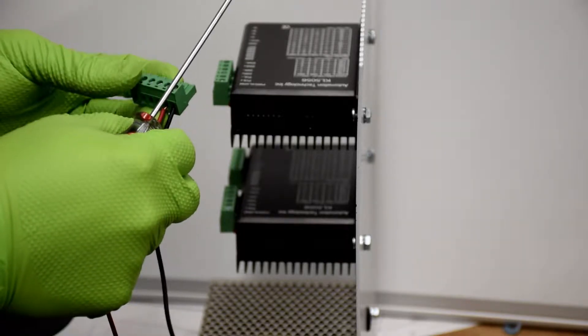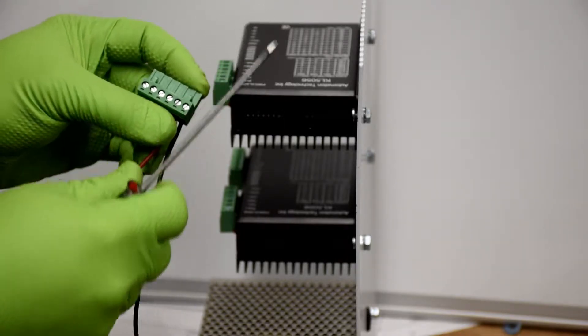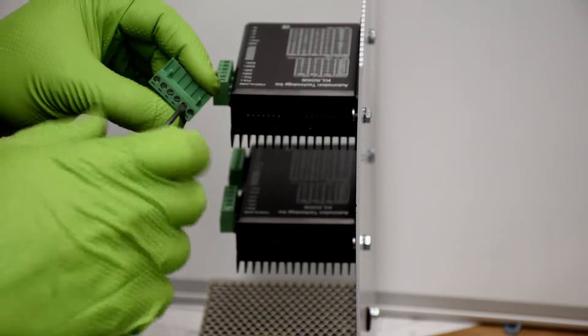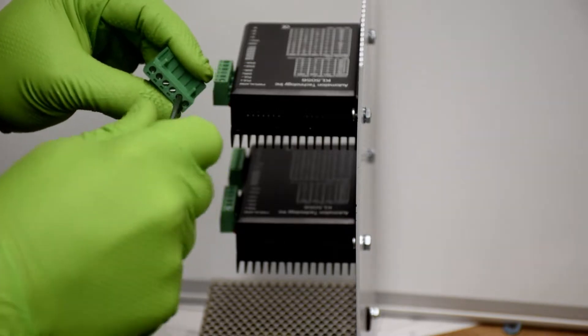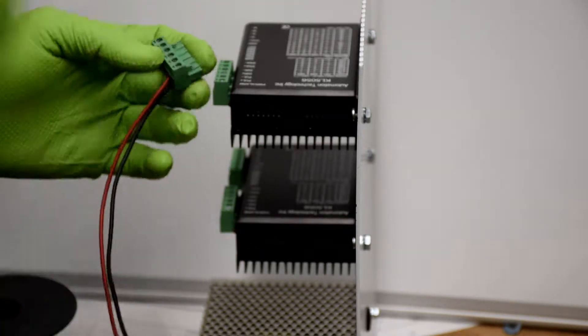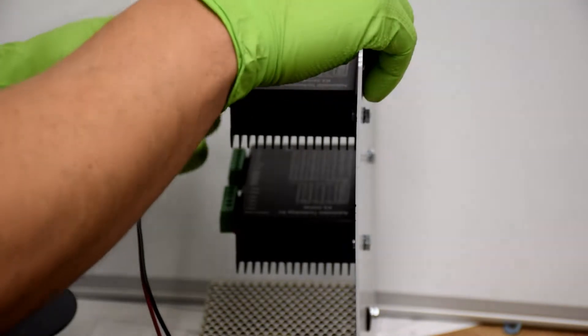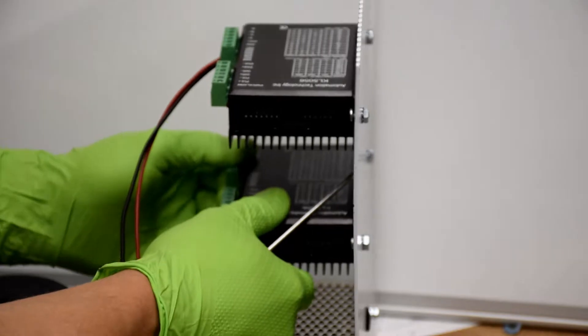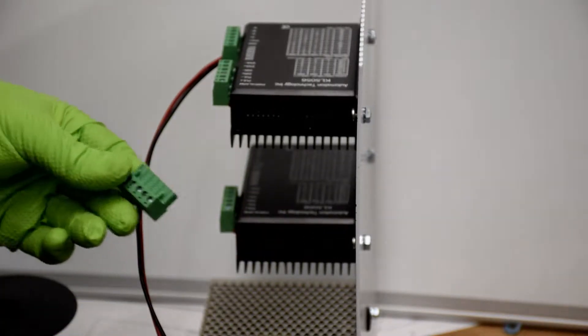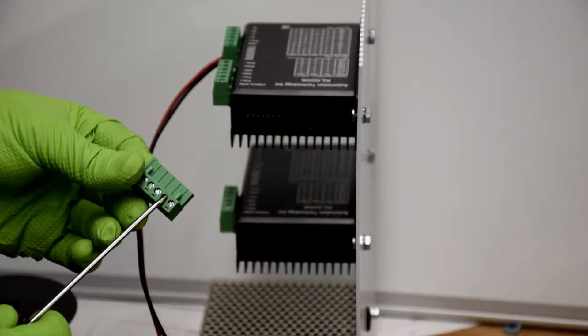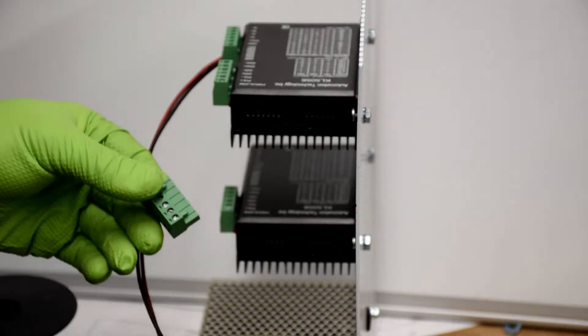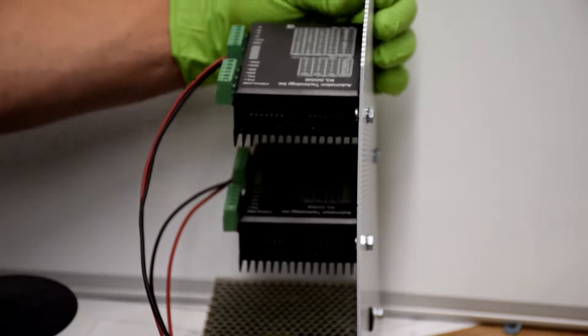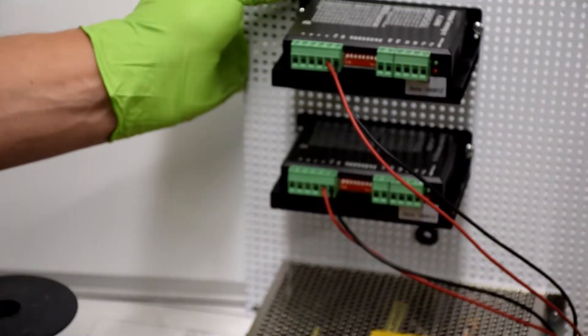Do the same thing with the red wire. Go ahead and repeat this step with the second stepper driver. Negative, positive. Your components on the backplate should now look like this.